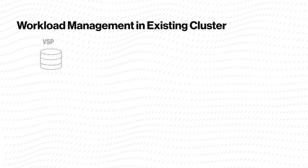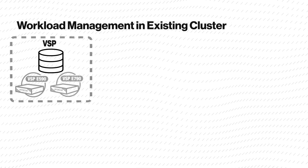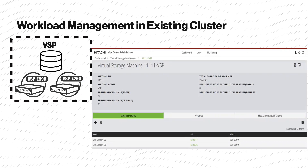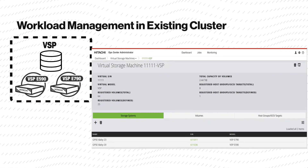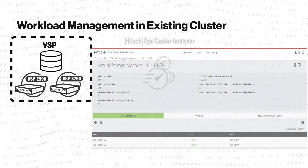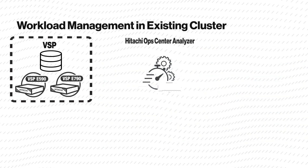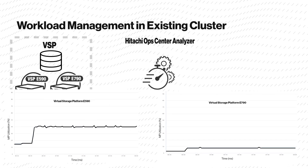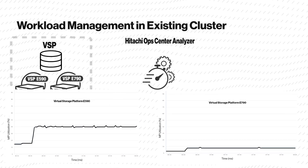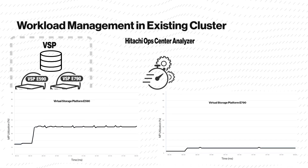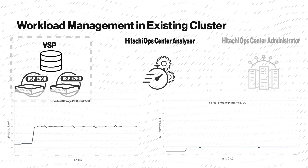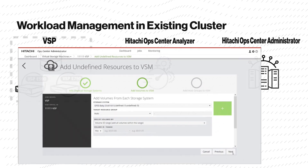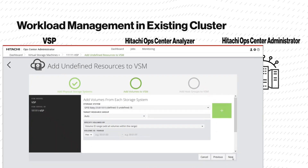In this example, we have a Virtual Storage Machine Cluster 11111 with two storage systems, a VSP-E590 and a VSP-E790. We have a new application to provision, and we're using the Hitachi Ops Center Analyzer to determine the current usage of both storage systems so that we can balance the workload. We can see that the E790 storage system is the least used, so we'll use Ops Center Administrator to provision new volumes from VSSO using this storage system.